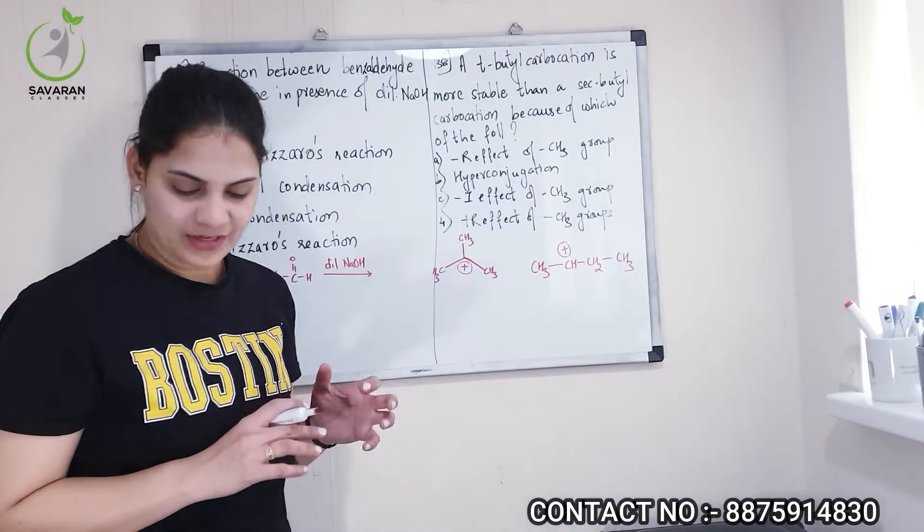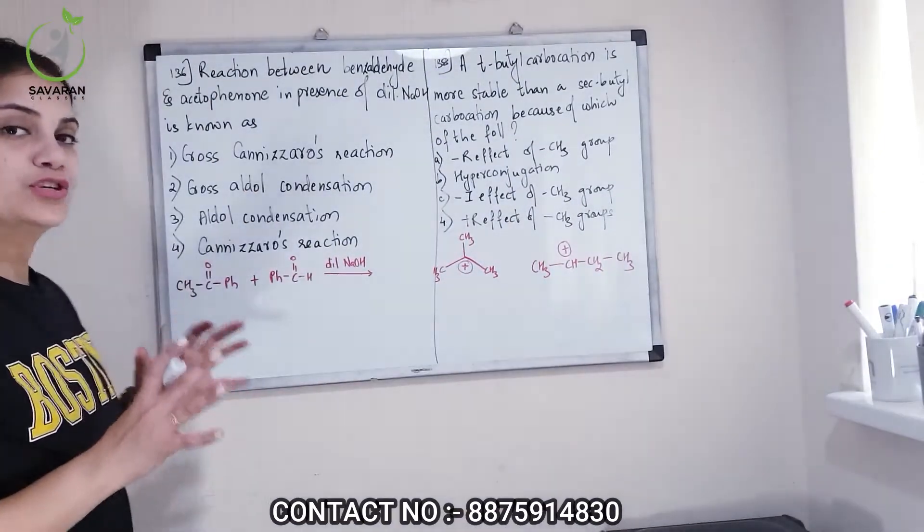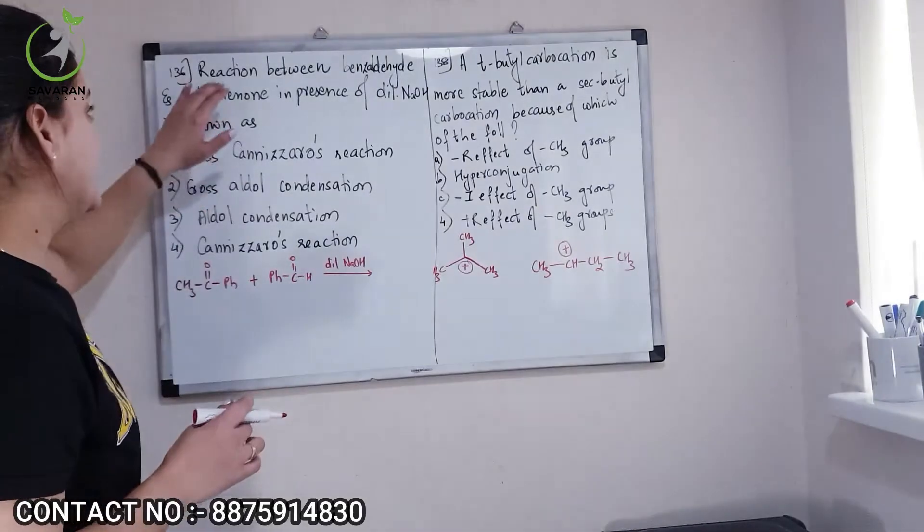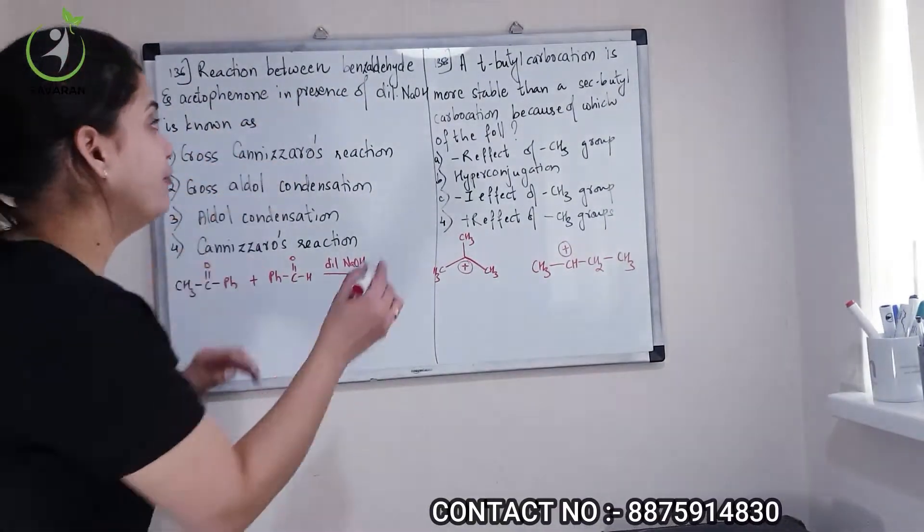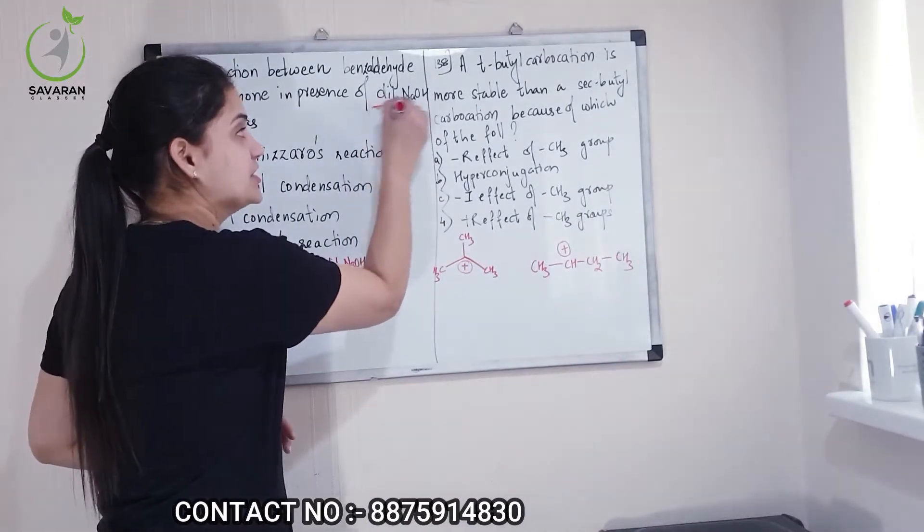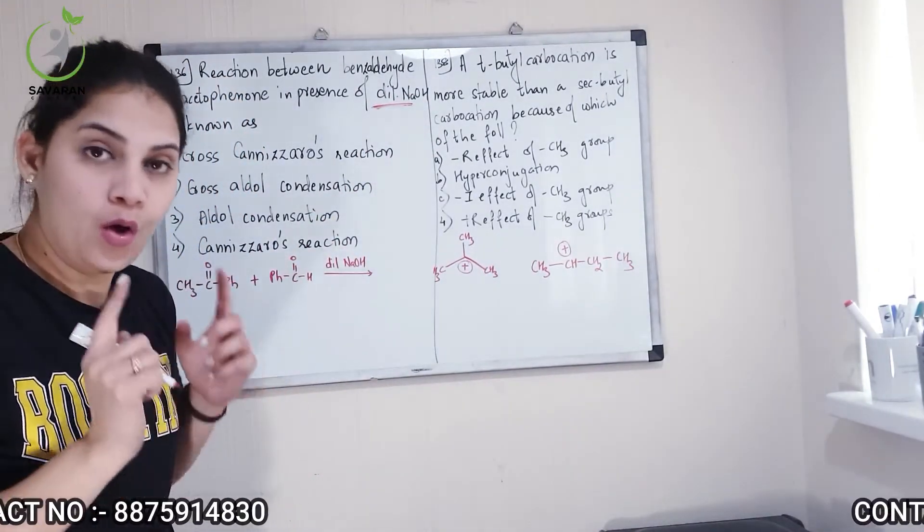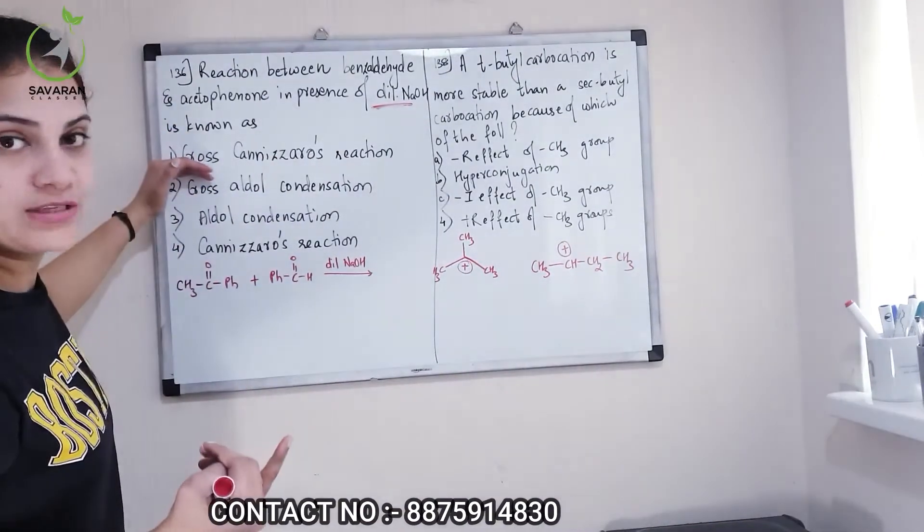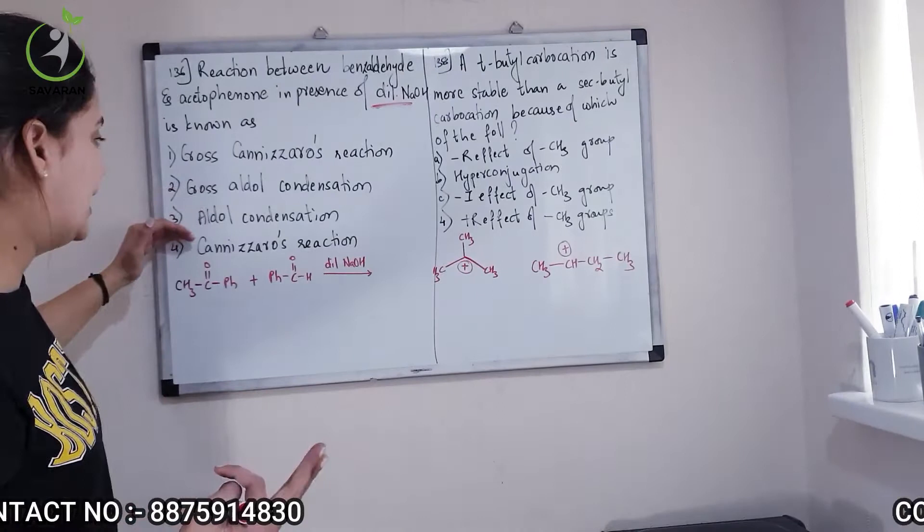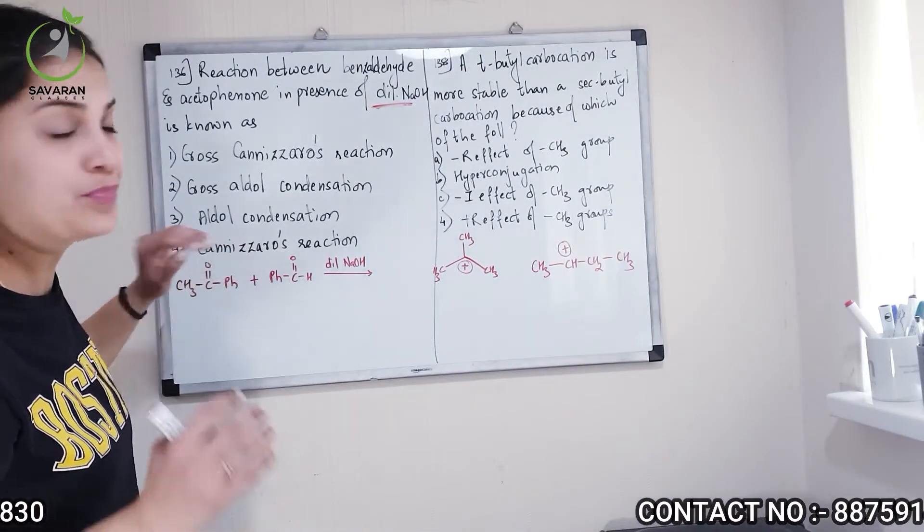So guys, let's look at question number 136. What is the reaction between benzaldehyde and acetophenone in presence of dilute NaOH? Don't forget to see dilute. Why? This reaction is known as what? It is cross canizzaro, it is cross aldol - aldol or canizzaro?